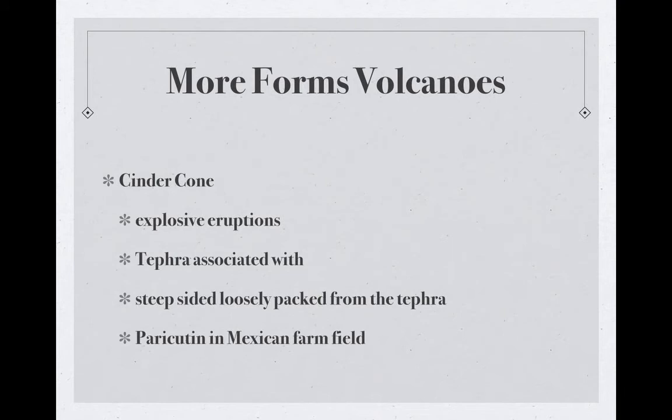Next we have the cinder cone volcano. This involves explosive eruptions — tephra goes spewing up in the air and falls right back down, giving us steep-sided, loosely packed cones from the tephra. An example is Parícutin in the Mexican farm fields. These come up very rapidly because they're explosive.